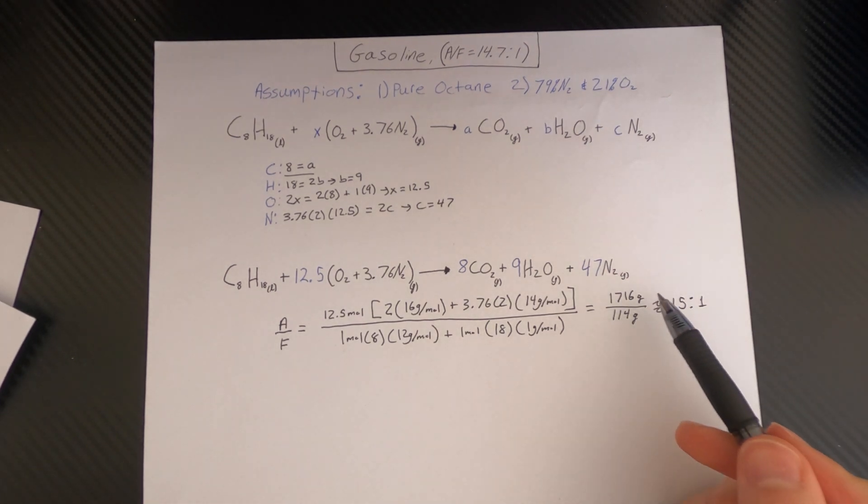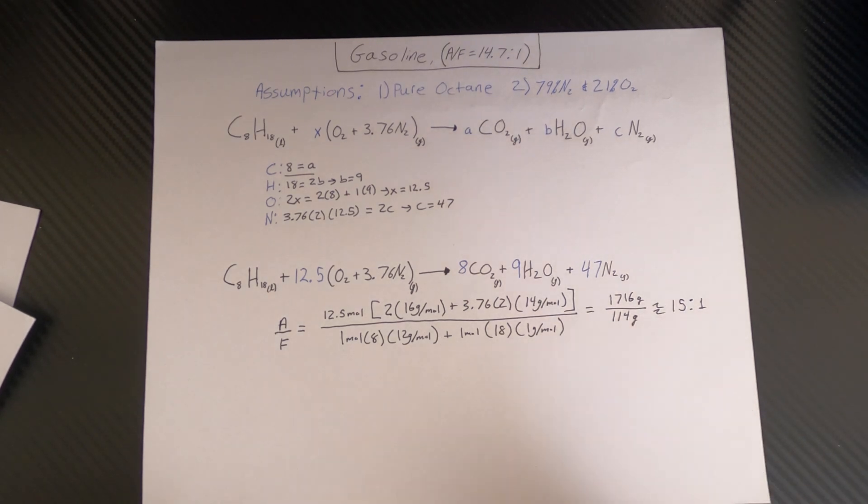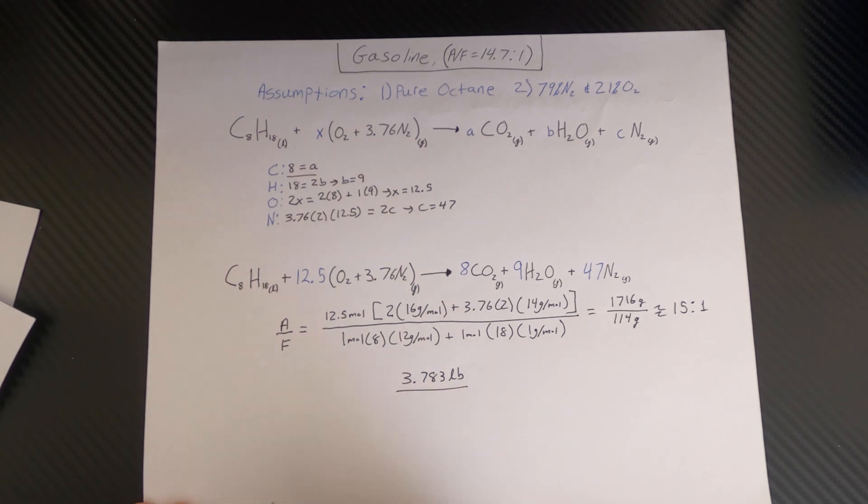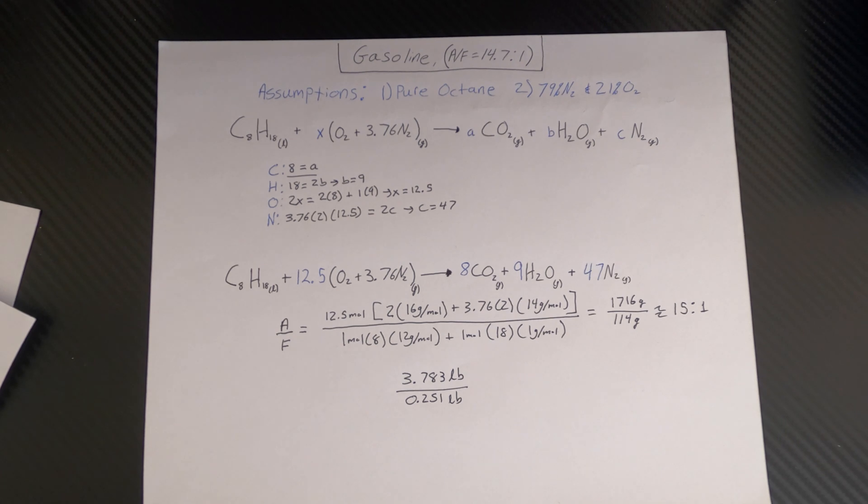So that basically means you need 15 parts air to every one part of your fuel. Or in other words, if you want to replace this with grams to make this something more familiar, that'll be about 3.783 pounds of air divided by 0.251 pounds of fuel. So every time, for example, your car brings in about 3.783 pounds of air, you need to inject 0.251 pounds of fuel to maintain a stoichiometric balance.